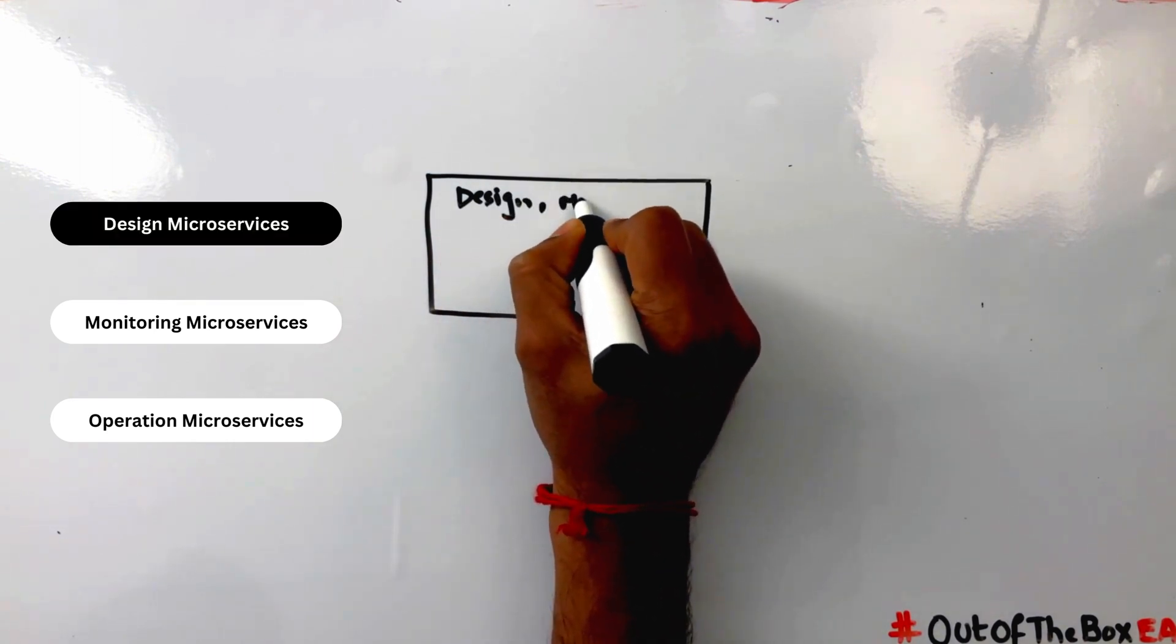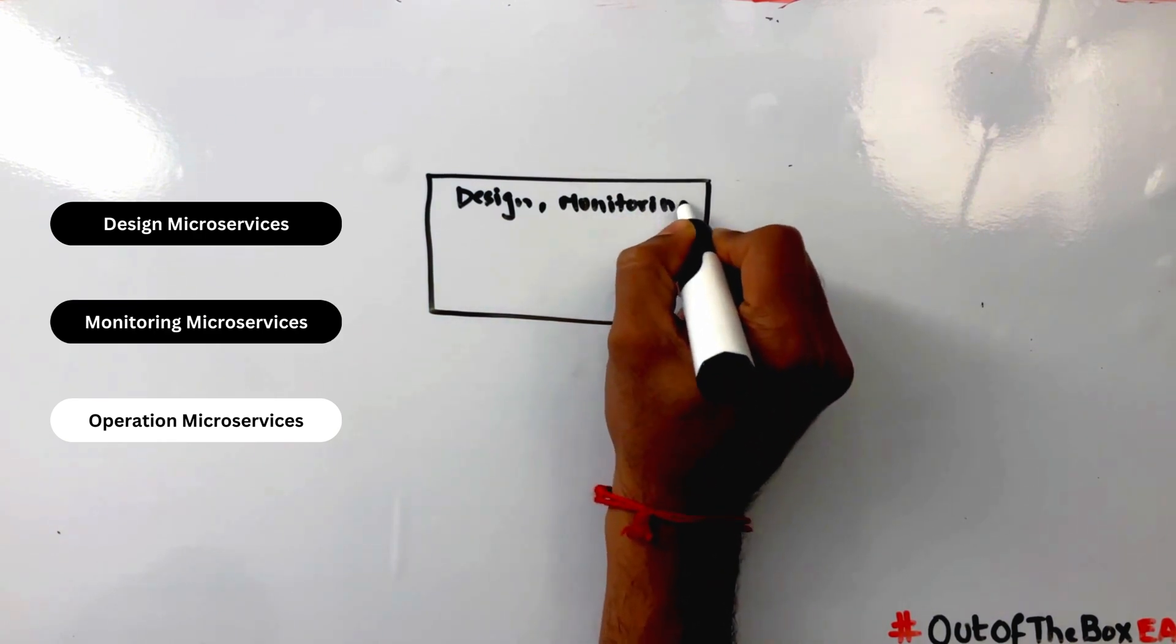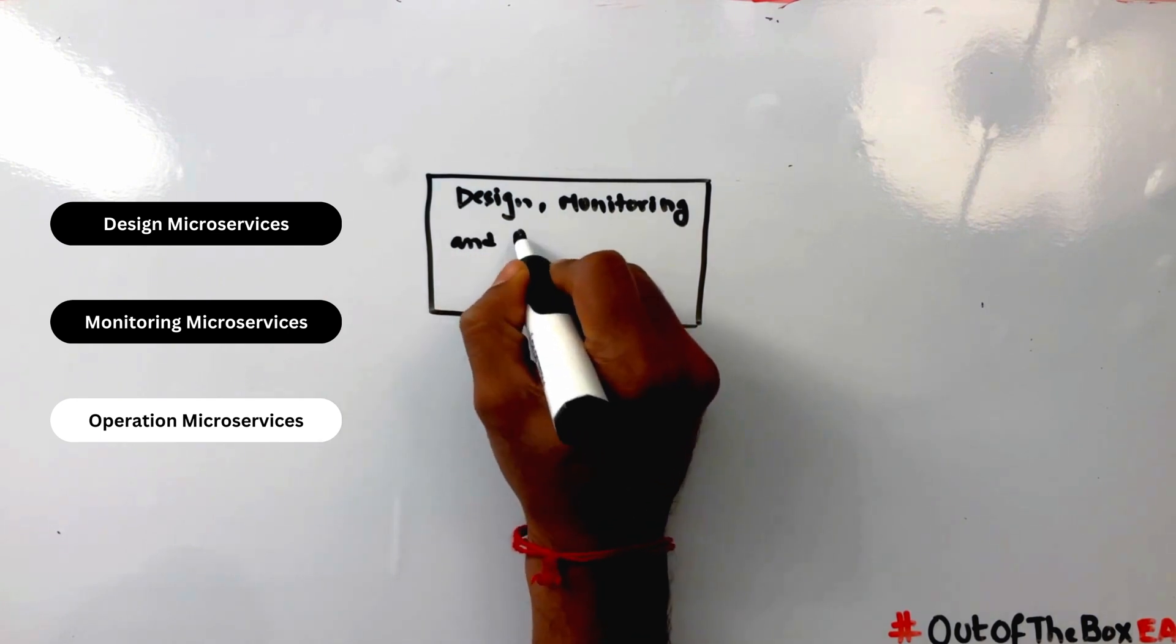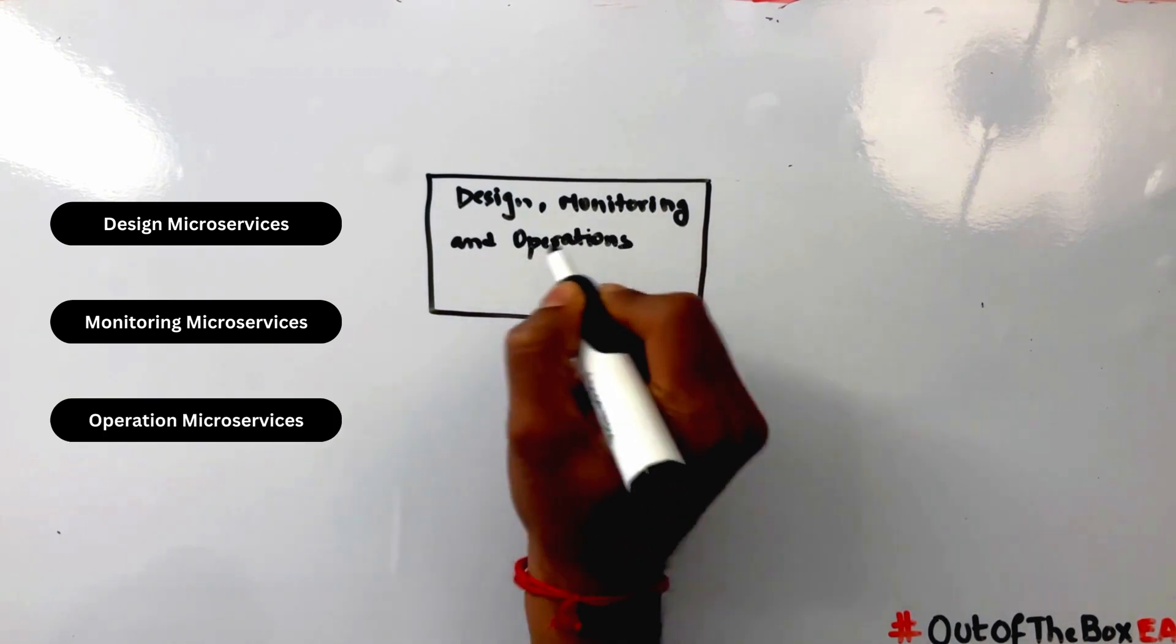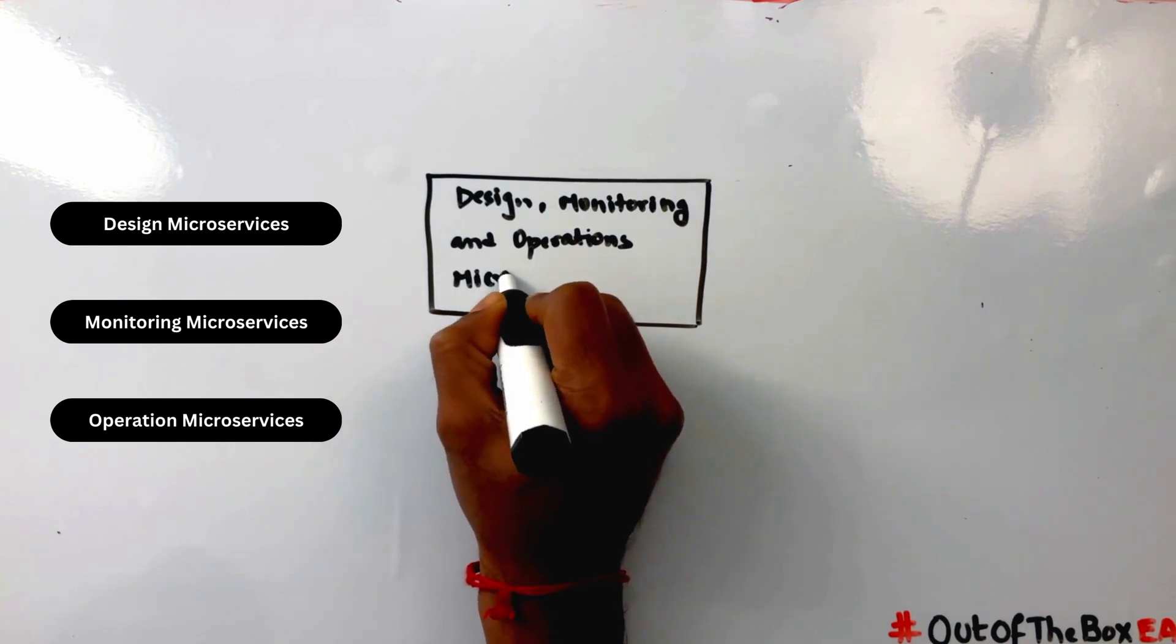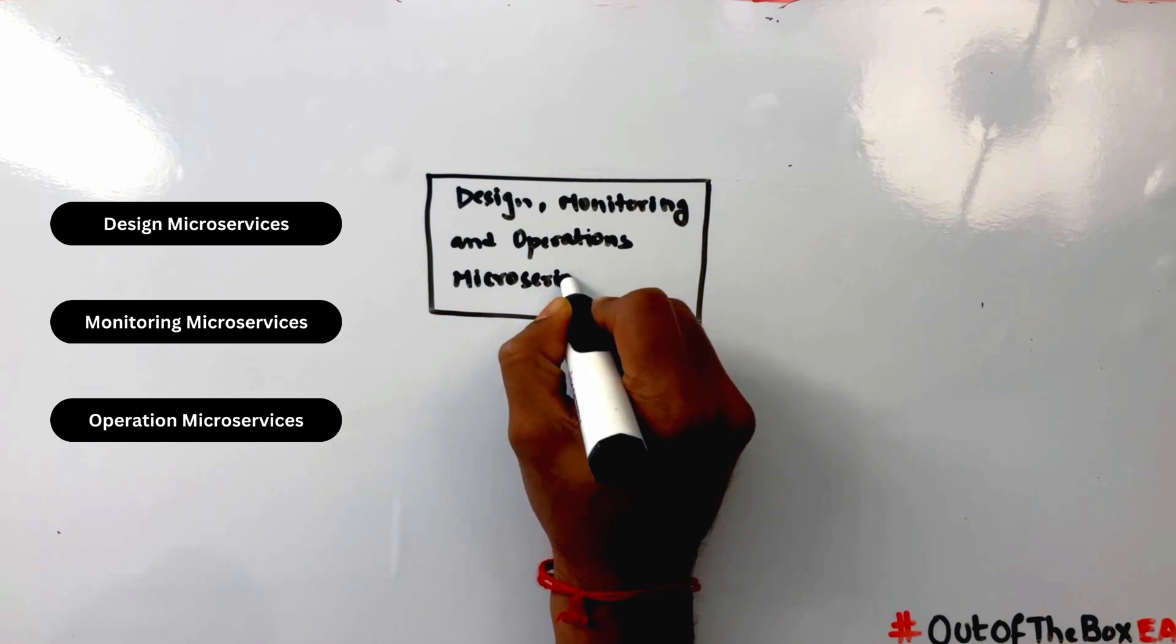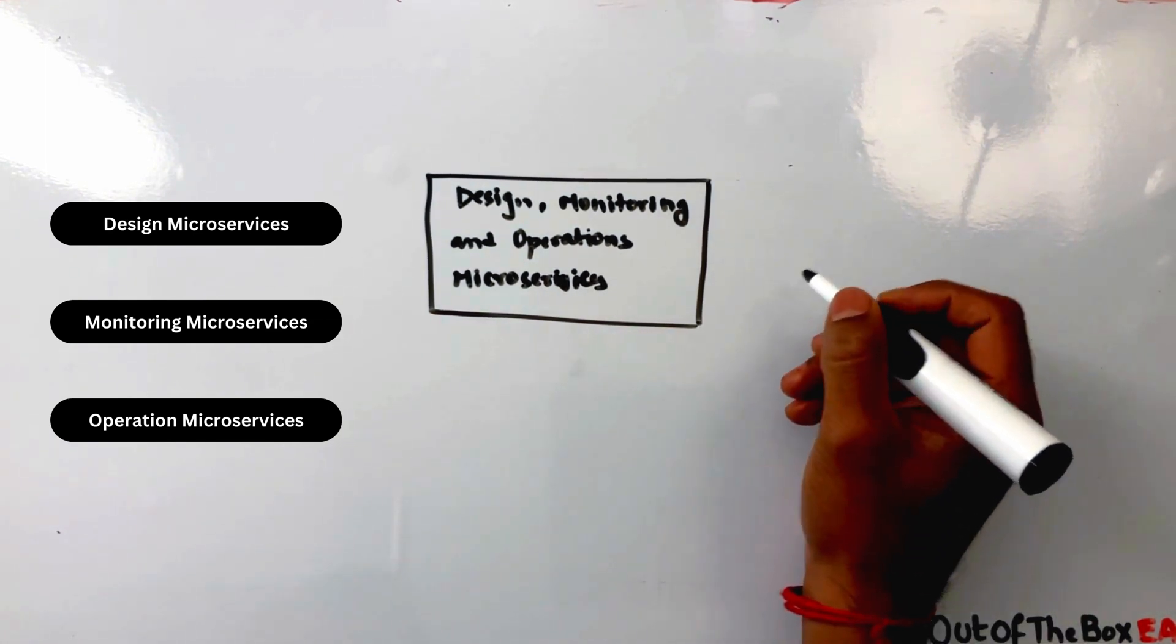The Design microservice provides a graphical interface for designing integration flows. Monitoring microservices helps in monitoring the integration flows and provides real-time insights into the performance of integration flows. Operation microservices provides tools for managing and operating the integration flows. It allows users to deploy, update and rollback integration flows and it provides tools for backup and recovery.